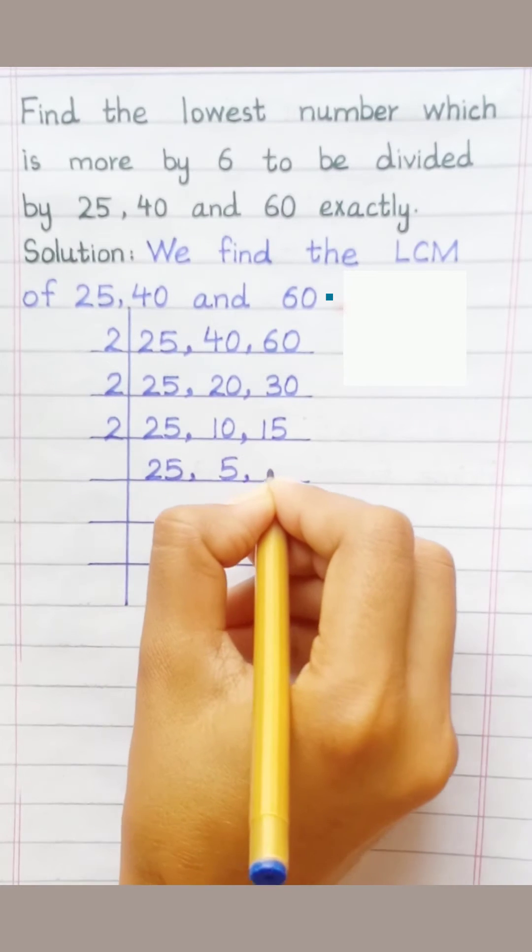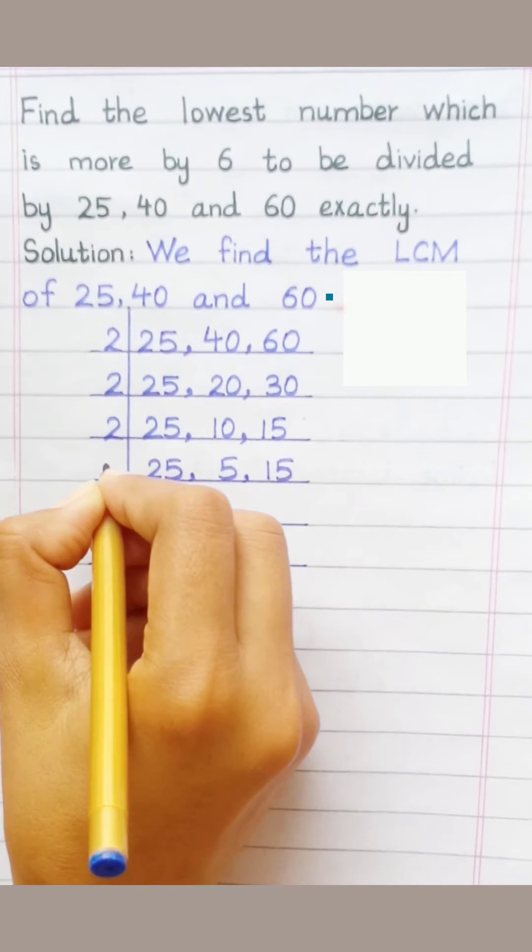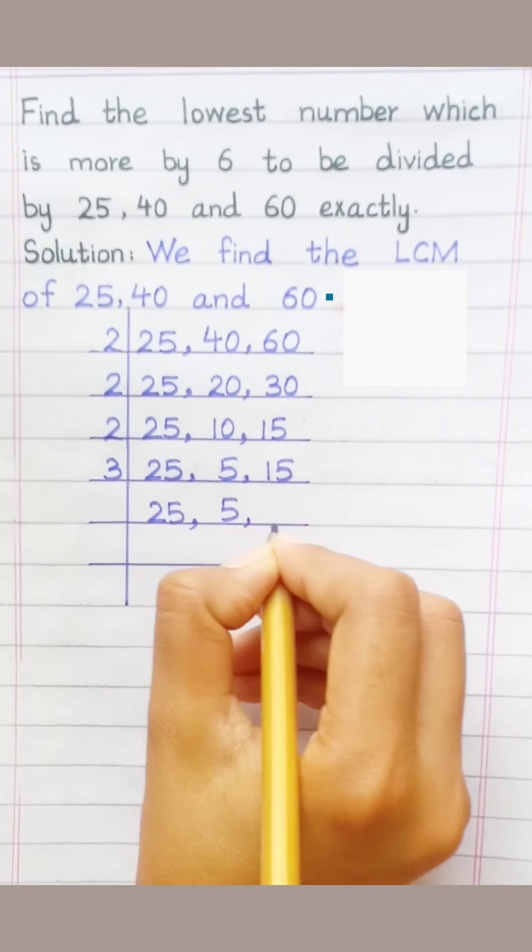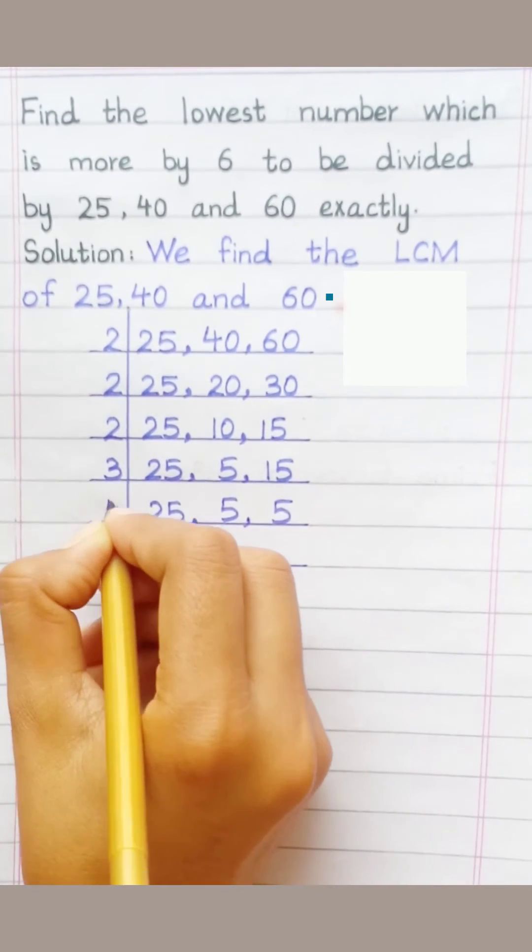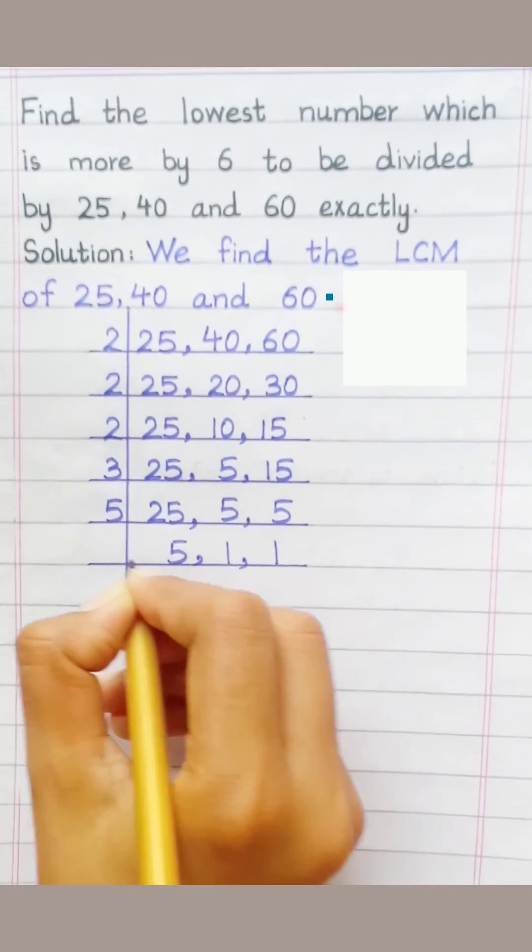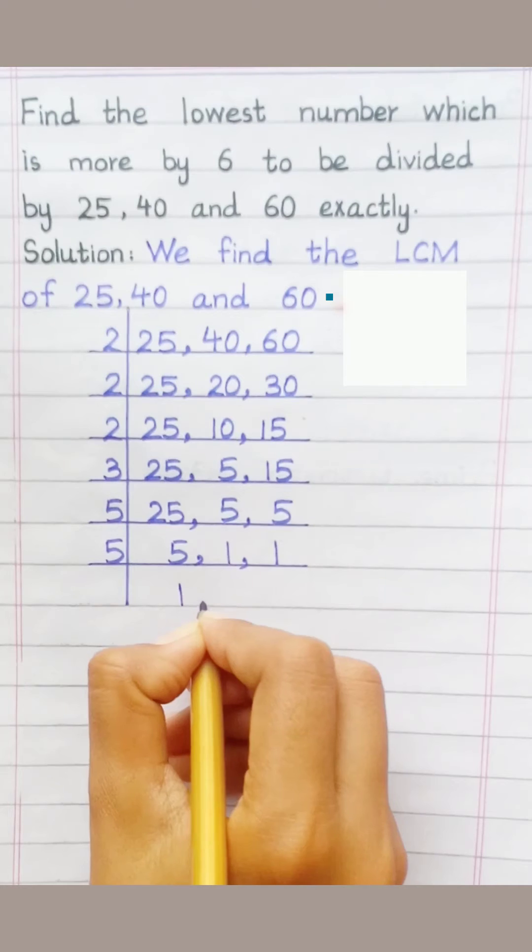Two into 10 is 5. Three into 15 is 5. Five into 25 is 5. Five into 5 is 1. Five into 5 is 1. Five into 5 is 1.